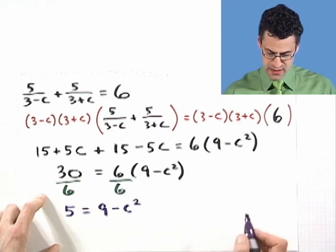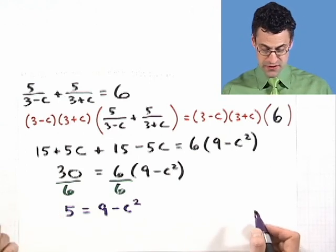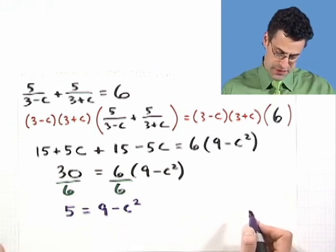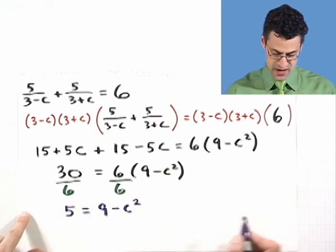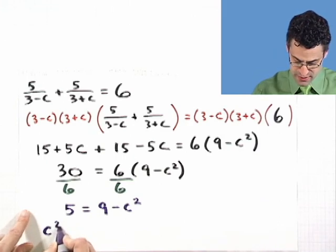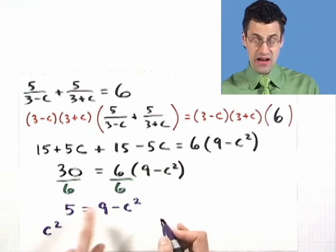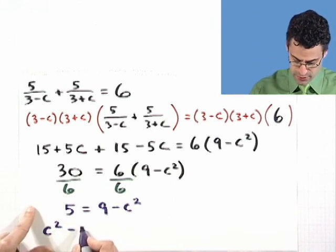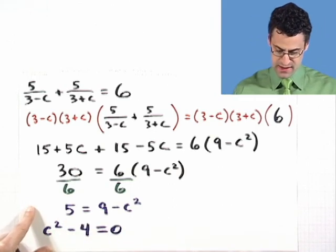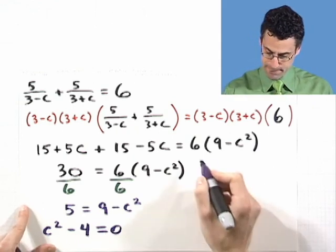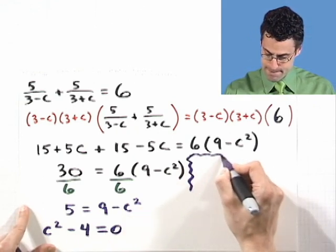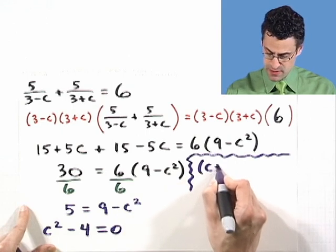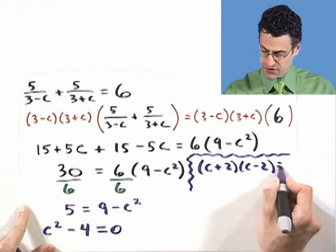Alright, and so what does that mean for C? Well, I can solve this for C. How do you want to do that? I guess I'll bring everything over to the left hand side. So, I'll add C squared to both sides, so I'll see C squared. And then I'm going to subtract nine from both sides. So five minus nine is negative four equals zero. And now I can factor that. And I see it's the difference of two perfect squares. So it's C plus two, C minus two equals zero.